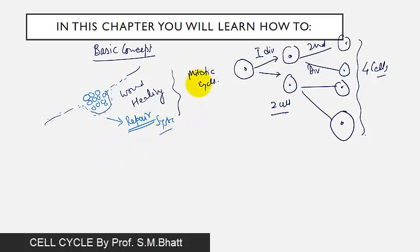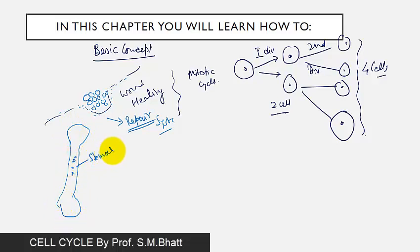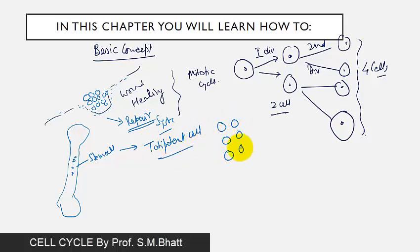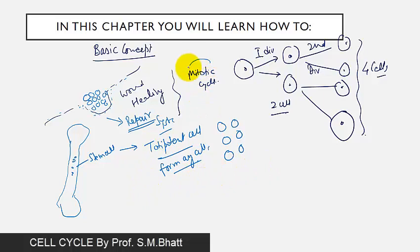Repairing is done by the mitotic cycle. Even the stem cells found in the bone marrow are totipotent cells, and they are constantly dividing. Totipotent cells are those cells which can form any type of cell. When a baby is growing, the mitotic cycle also plays an important role.